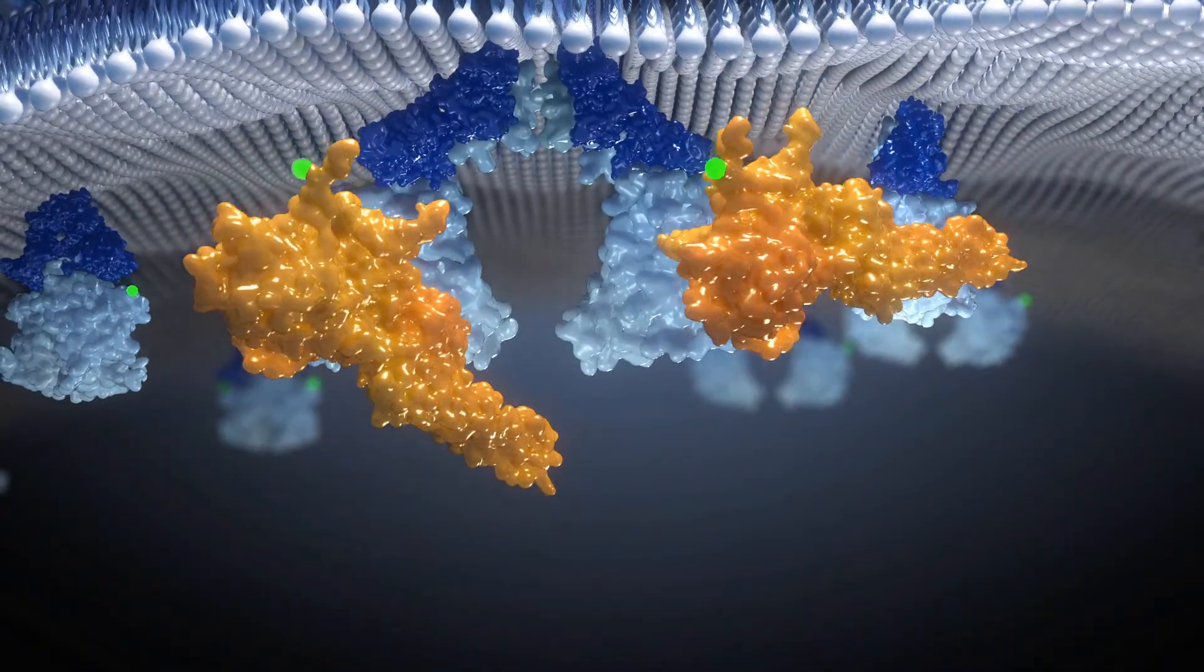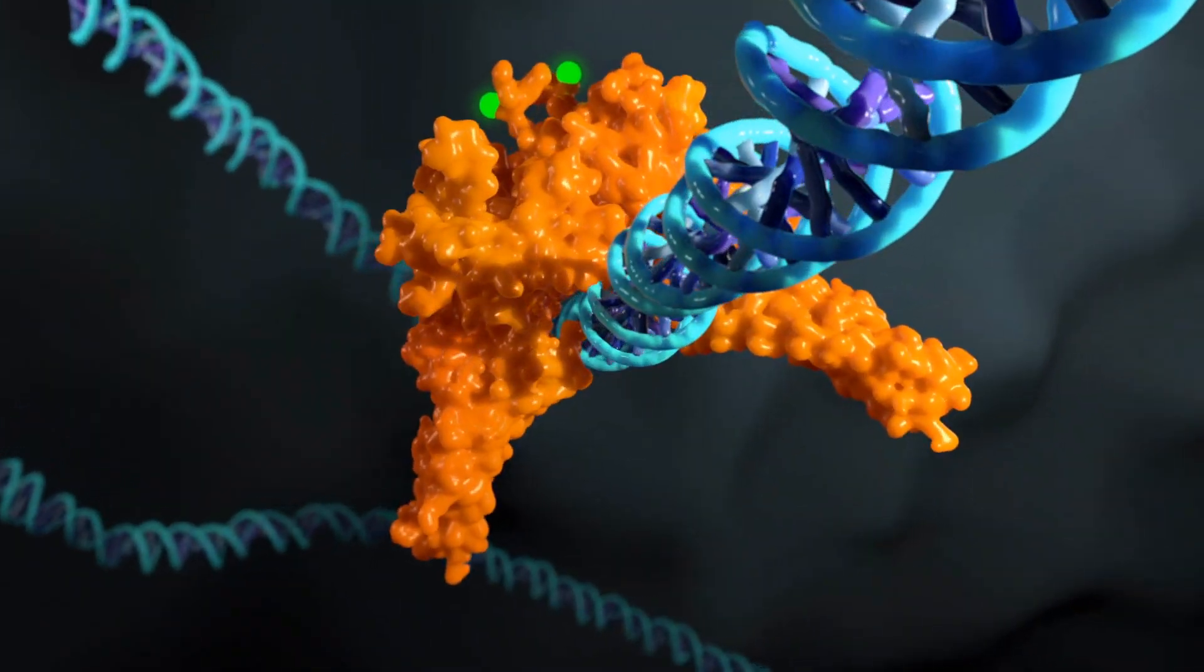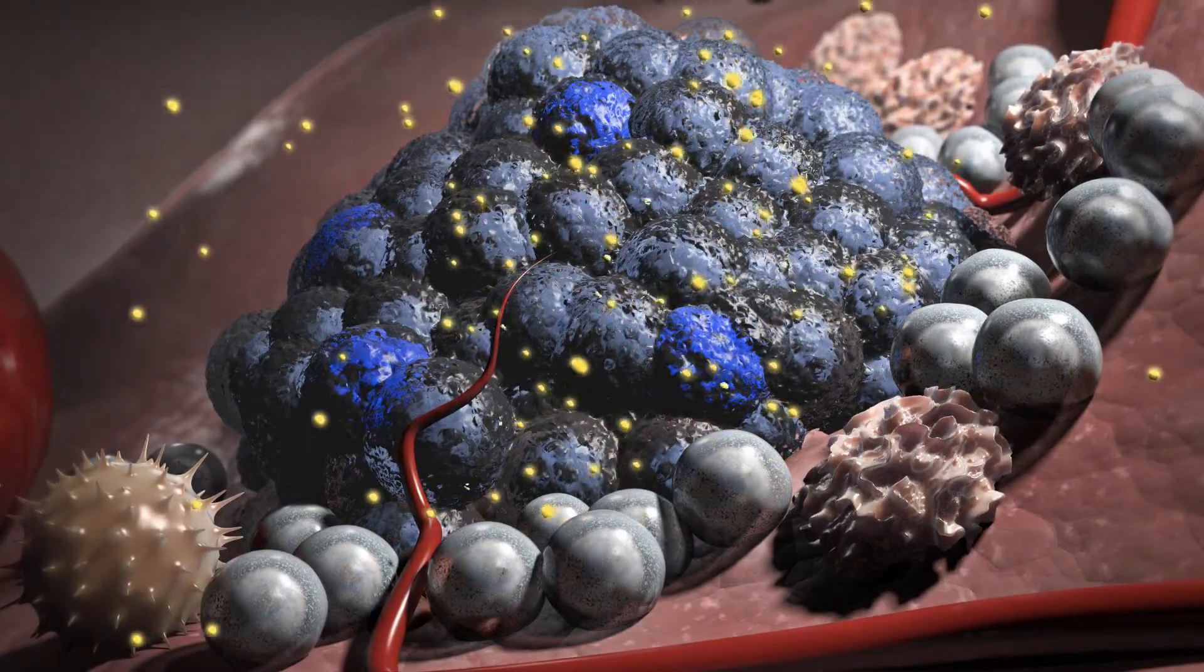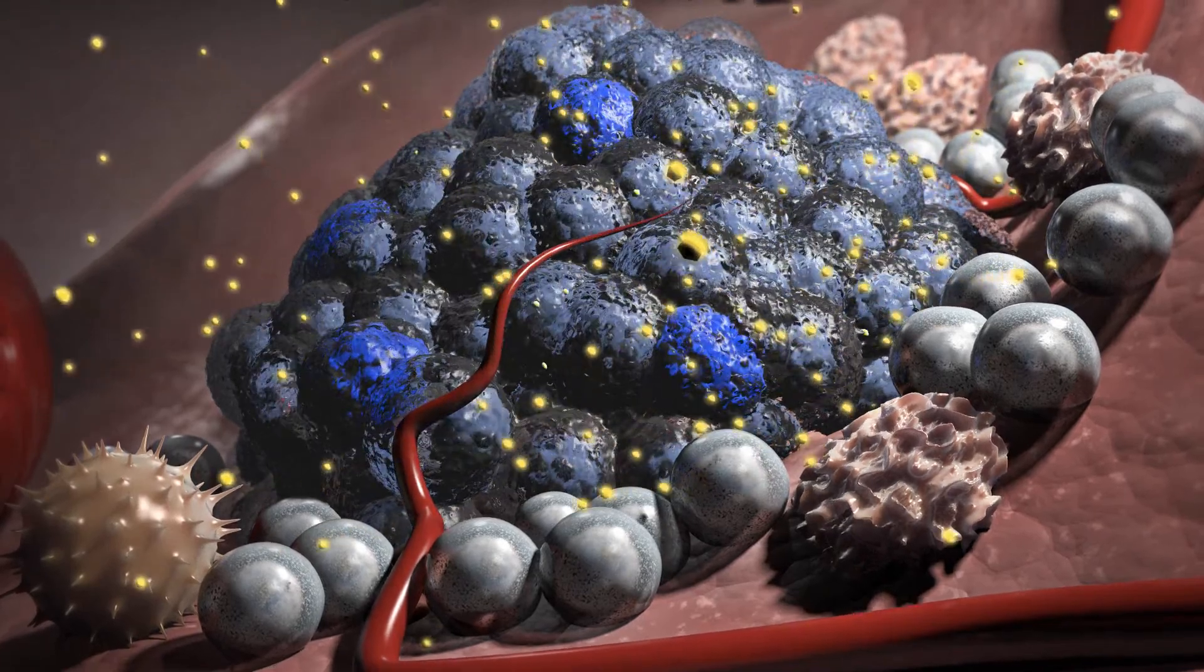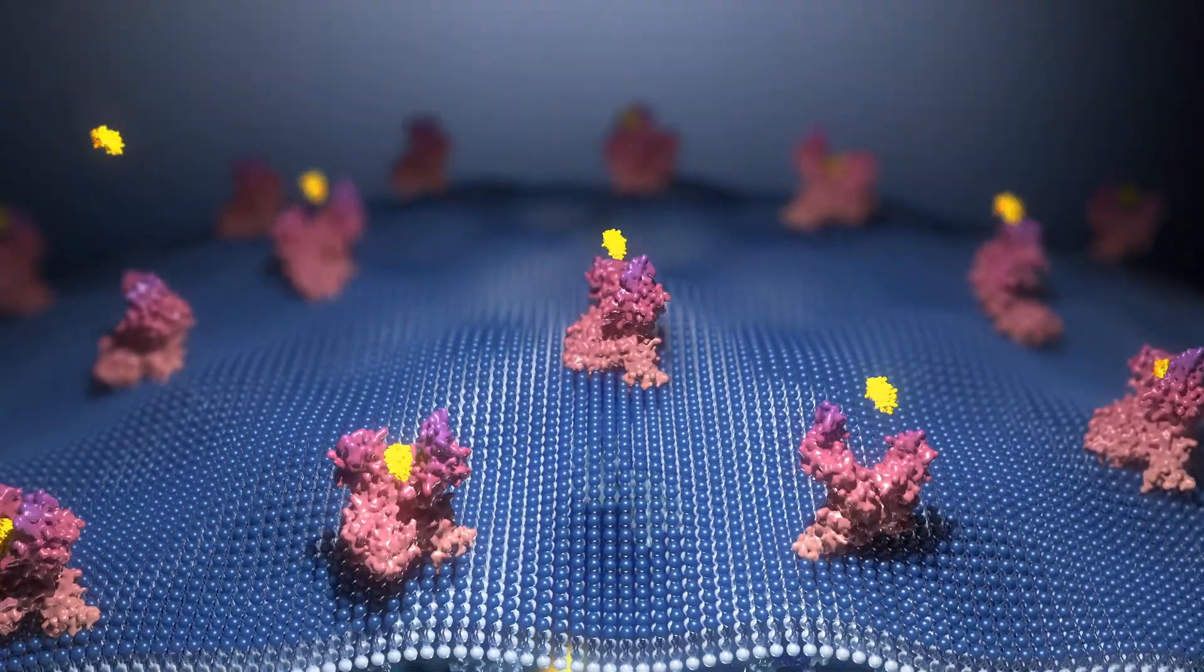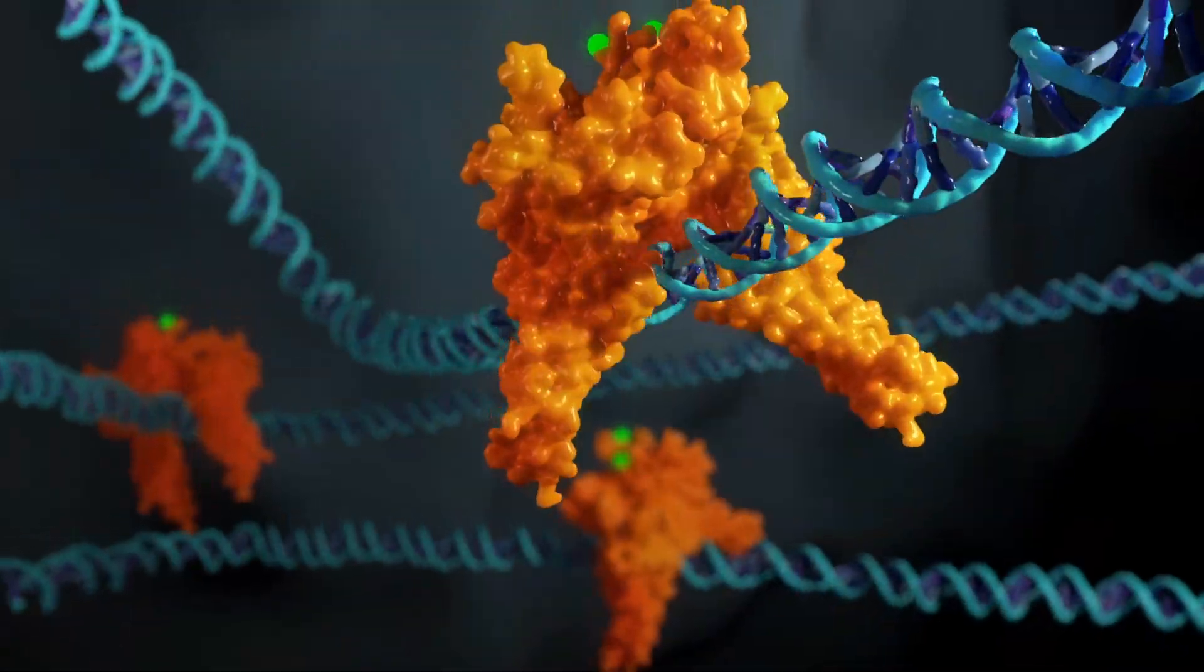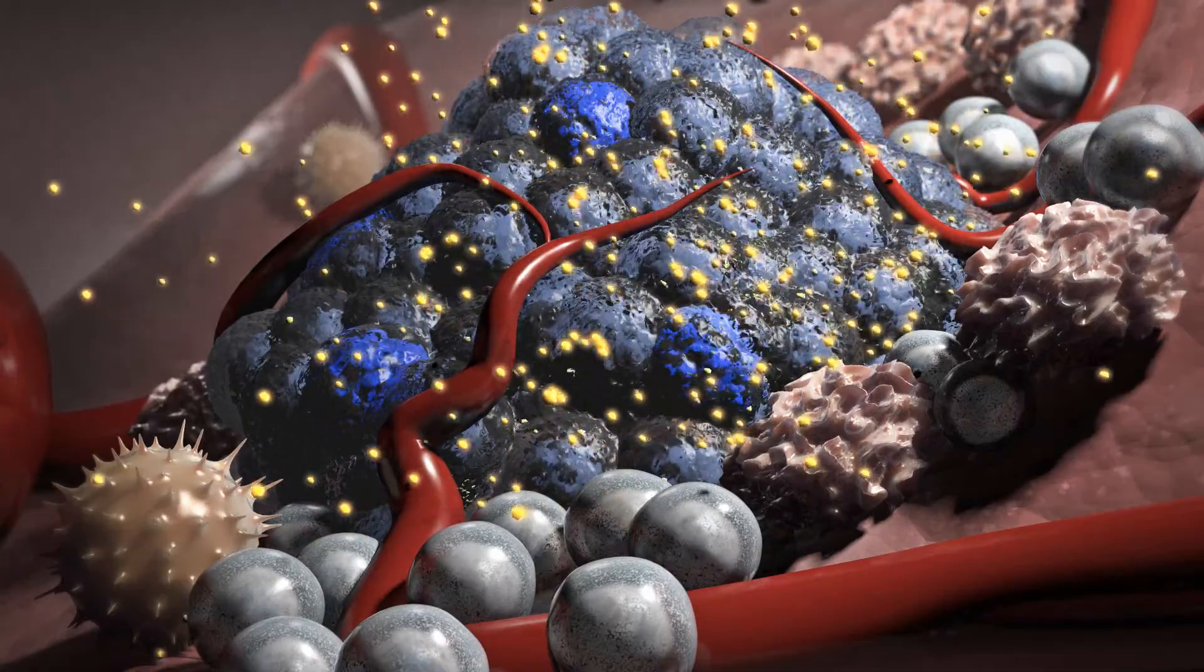Over-activated STAT-3 drives tumor-promoting inflammation by increasing the expression of pro-inflammatory cytokines, such as IL-6. These cytokines, in turn, bind to cell surface receptors and stimulate further activation of STAT-3, resulting in an inflammatory positive feedback loop that promotes tumor progression.